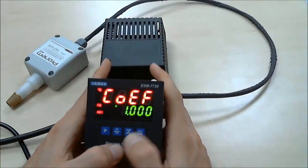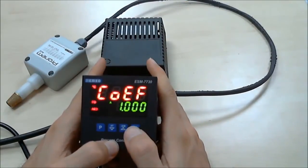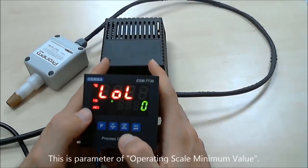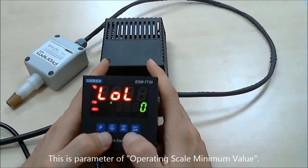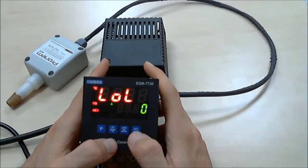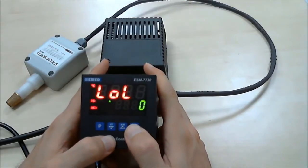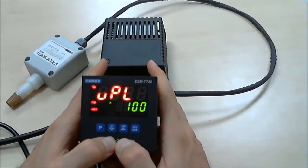Press SET button, then press SET button again. This is the operation scale minimum value parameter. We select number 0 for minimum value and press SET button.